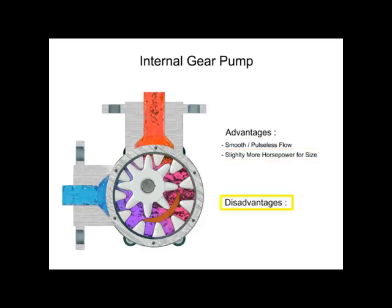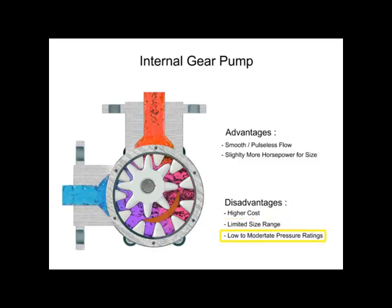Advantages of internal gear pumps are a smooth and almost pulseless flow and slightly more horsepower for its size. Disadvantages are its higher cost, limited size range, low to moderate pressure ratings, and few sources of manufacture.